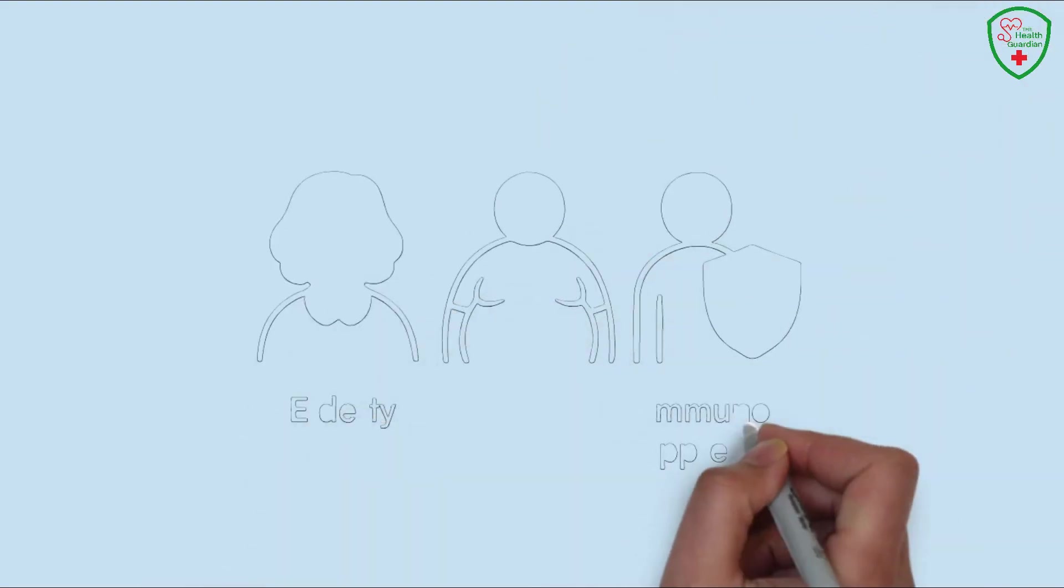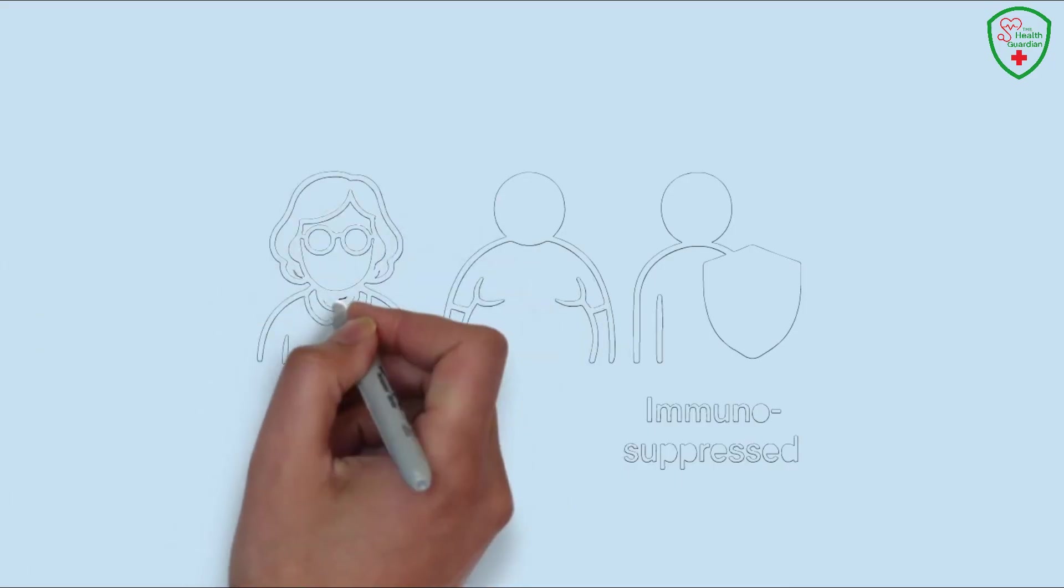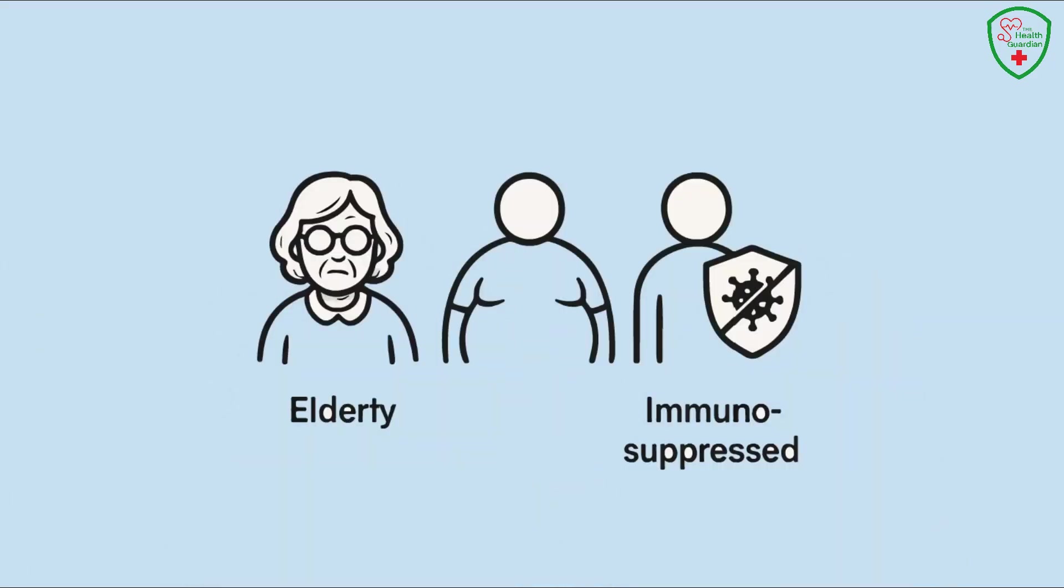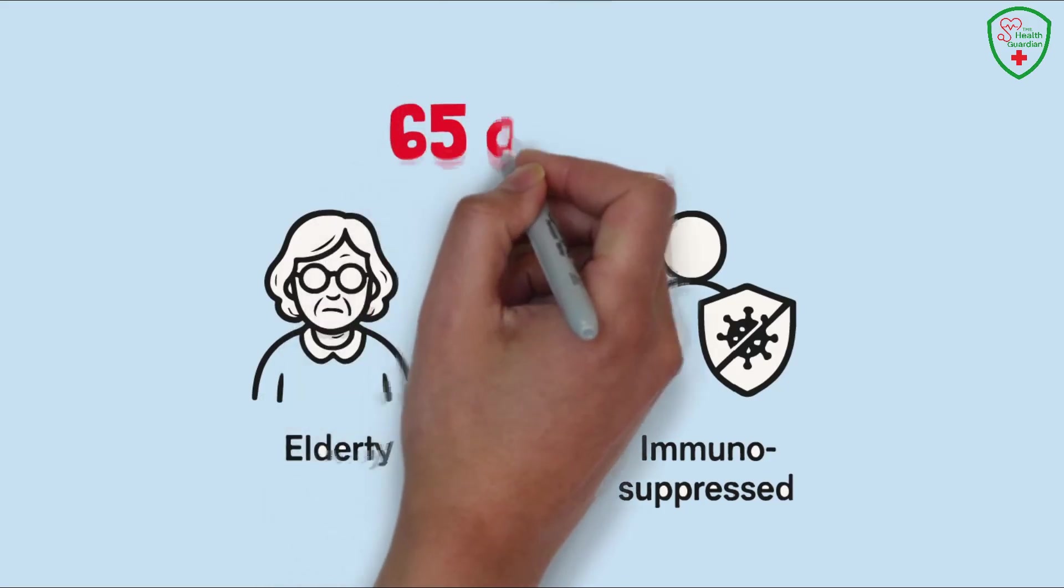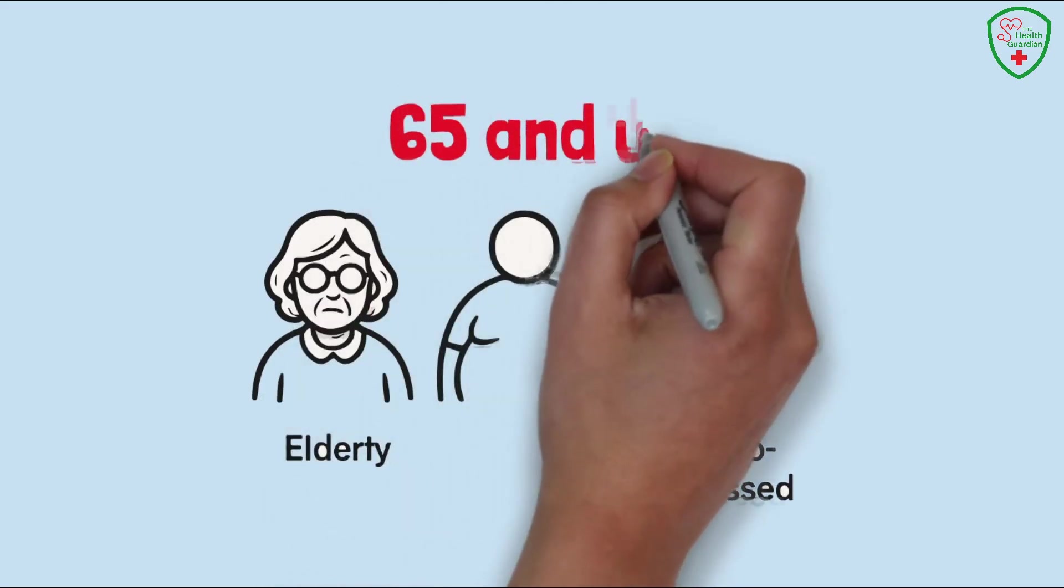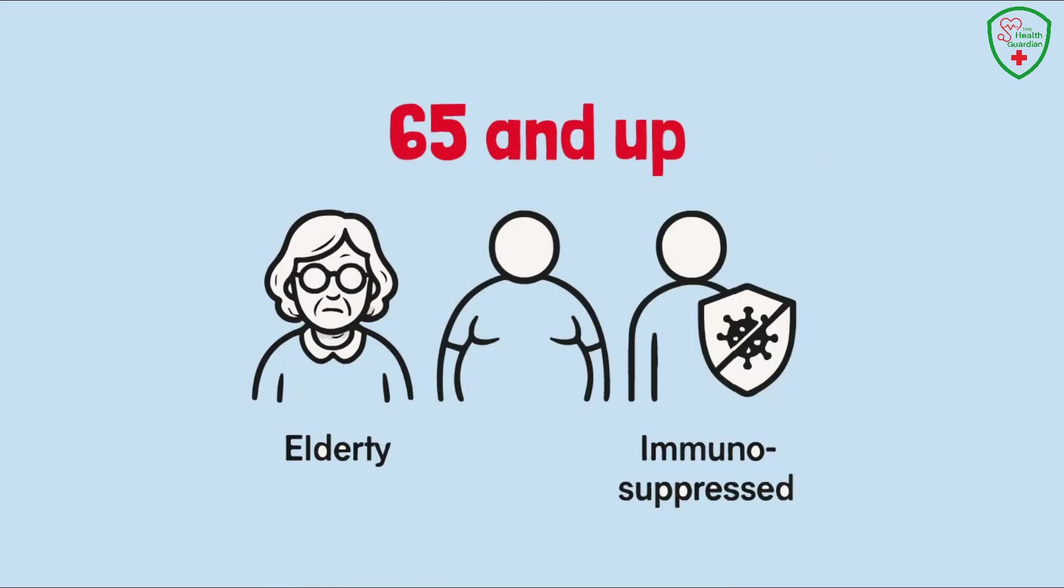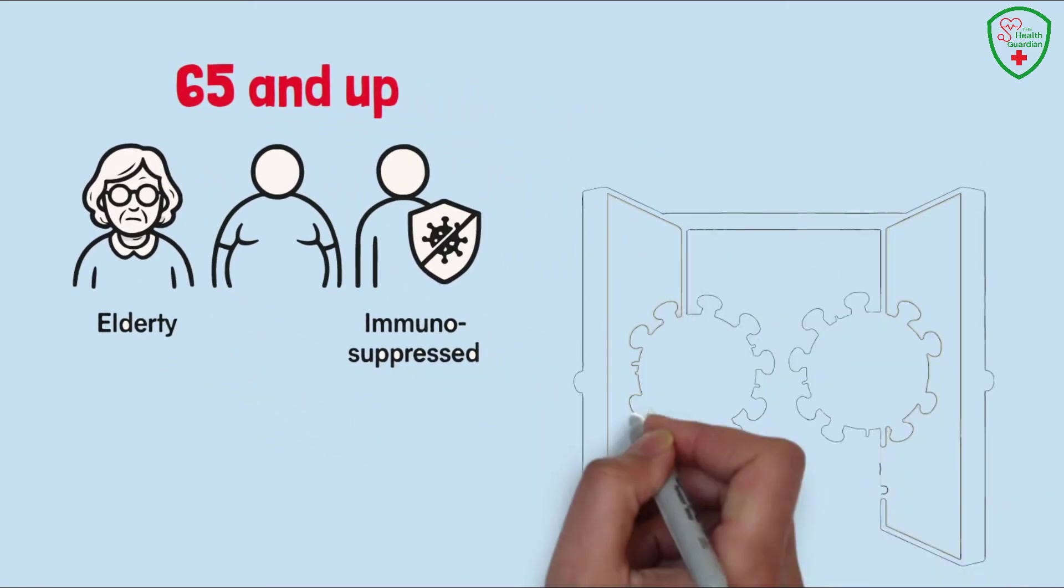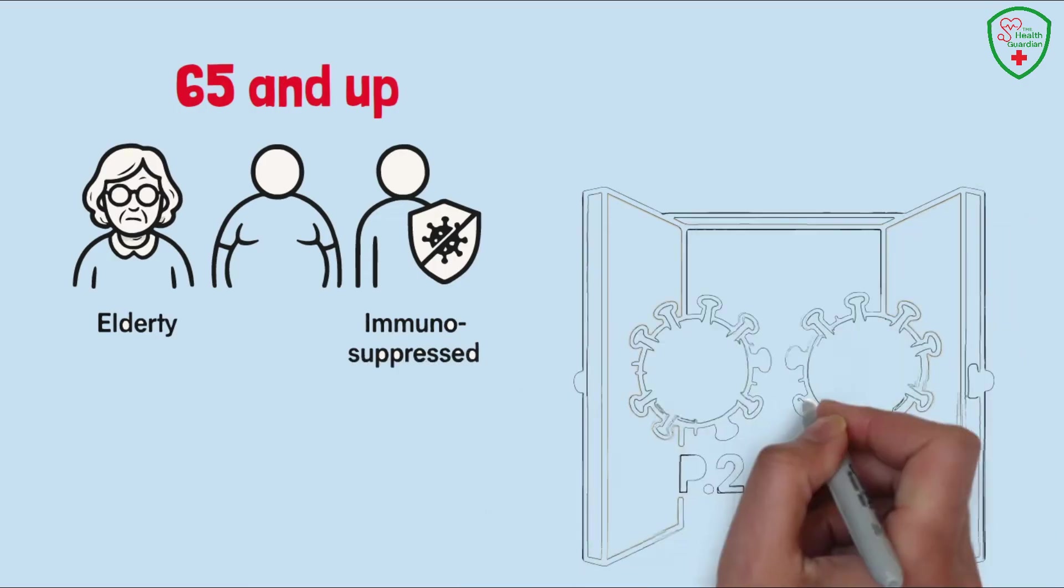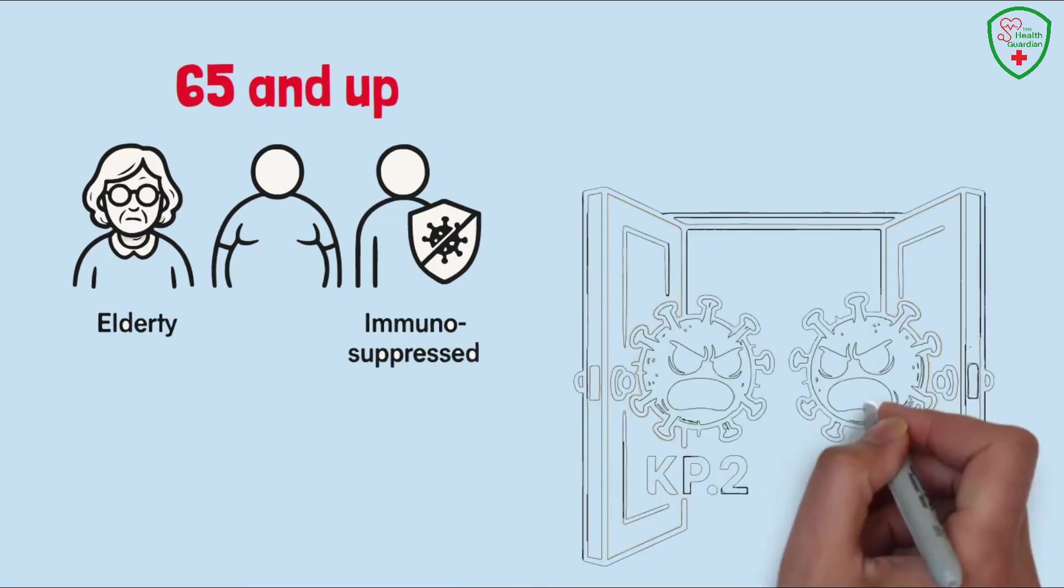So, who's most likely to deal with these new symptoms and the FLIRT variants? Well, COVID doesn't play favorites, but it hits some groups harder. Older adults, think 65 and up, are at higher risk, especially if they've got underlying conditions like diabetes, heart disease, or lung issues. These conditions are like an open door for the virus to cause more chaos, especially with KP.2 and KP.3's ability to spread faster.